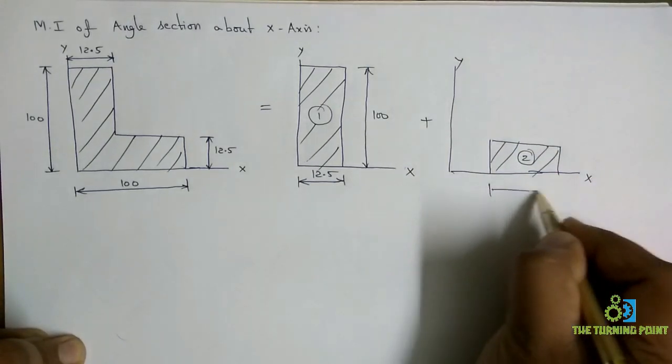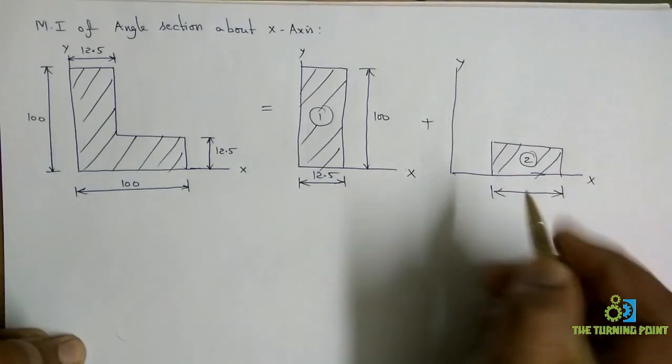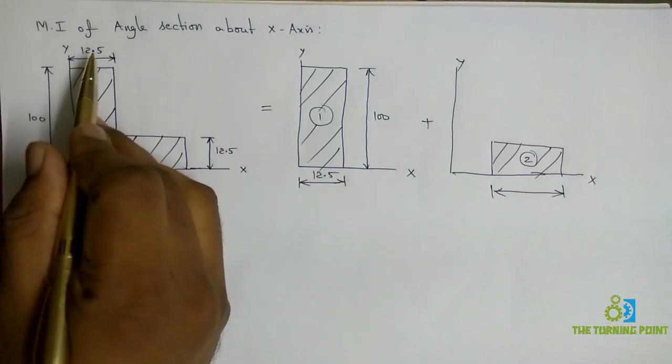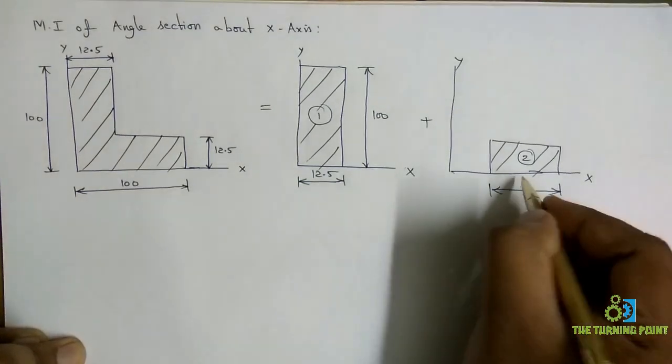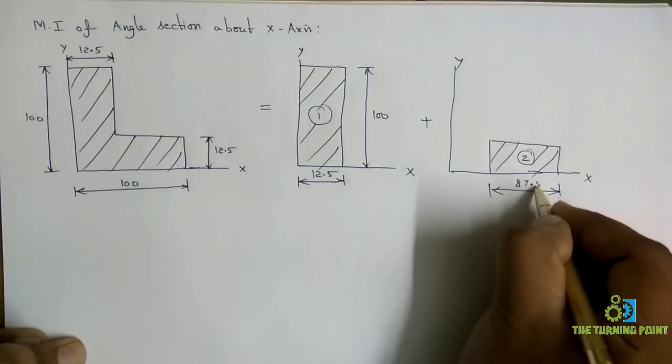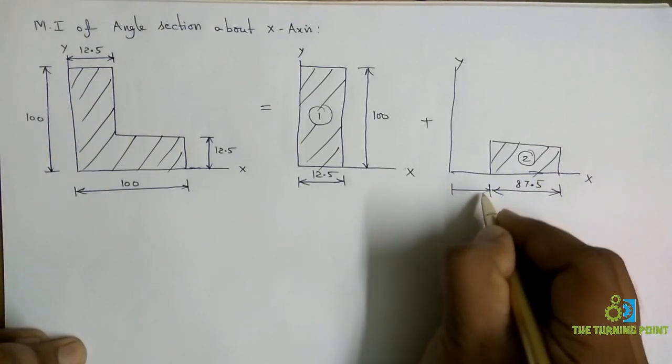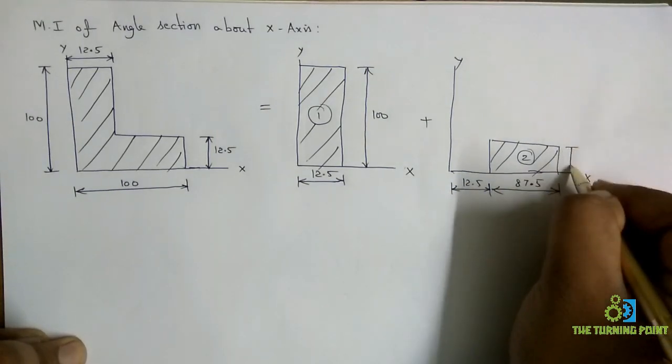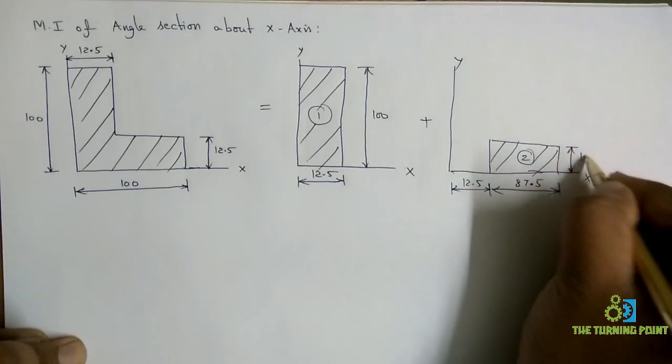The base of this one is total 100. From 100 you need to subtract 12.5, then you will get 87.5. This is the base and this one is 12.5. Height of the rectangle is also 12.5.